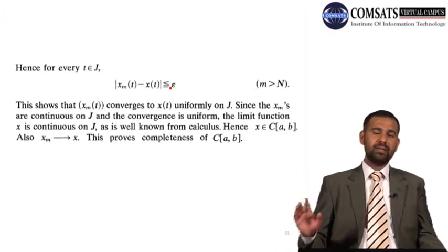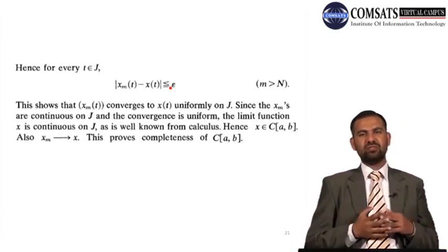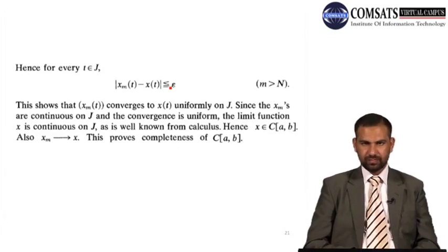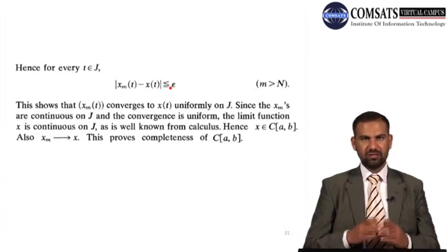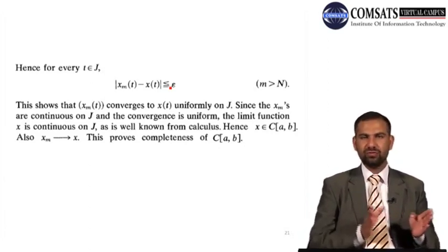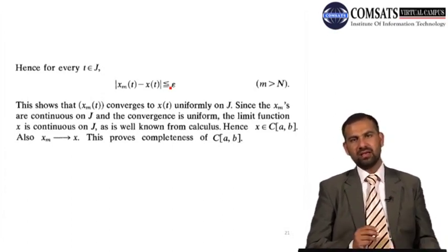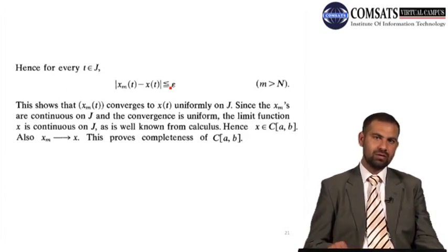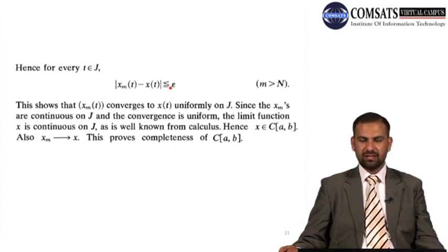The space of all continuous functions is complete. It has many subspaces — for example, polynomial functions, since every polynomial is continuous. The space P_n of polynomials defined on [a,b] is a subspace of C[a,b]. To show P_n is complete, we only need to show it is closed, because any closed subspace of a complete metric space is itself complete. So we need to show P_n = closure of P_n.